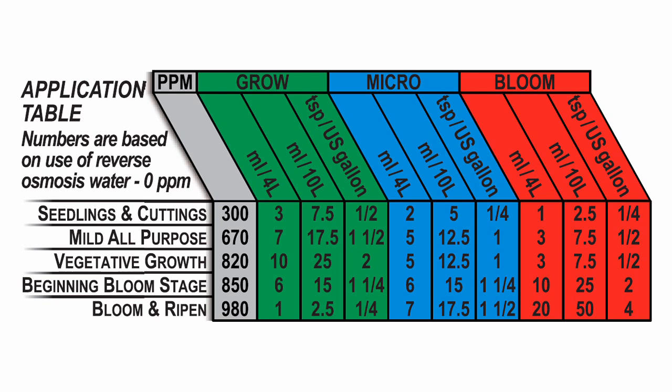If you look to the right of the growth stage column, you'll see PPM, which stands for parts per million. Assuming the water you're using is distilled or rainwater and it's perfectly pure, that rainwater will have zero parts per million of impurities or chemicals. For example, if we look at seedlings and cuttings, once we're done mixing our nutrient solution, our water should be reading at about 300 parts per million of nutrient that we have added to that water.